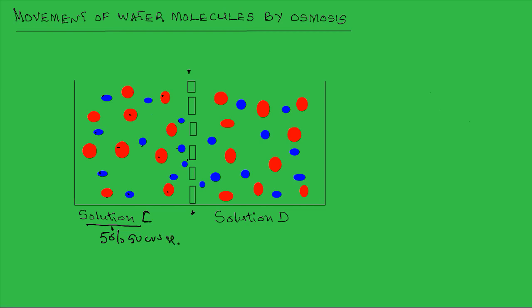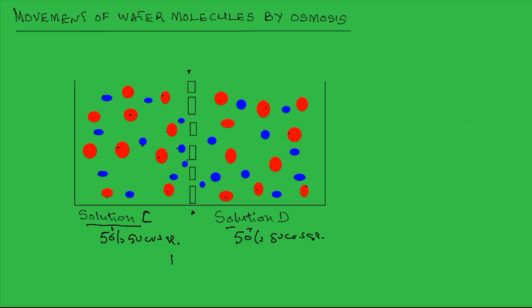Likewise, if you look at the number of molecules of sucrose and water in solution D, you see that they are the same — 10 water molecules and 10 sucrose molecules. So solution D is also 50% sucrose. These two solutions, having the same concentration, are said to be isotonic. Solution C and D are isotonic.